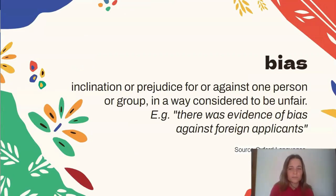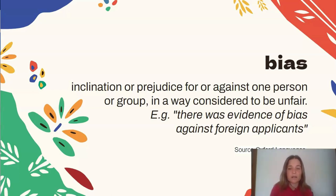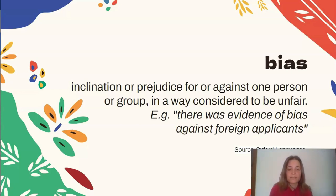To give a definition of what we mean by bias, here is one from the Oxford Dictionary: it is an inclination or prejudice for or against one person or group in a way that is considered unfair. For example, there was evidence of bias against foreign applicants. This is a very generic definition but is the one we use in this project, and I wanted to introduce it because this workshop comes from different areas in natural language processing.